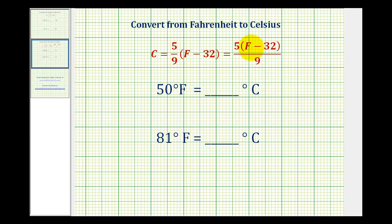To convert from Fahrenheit to Celsius, we use the following equation. Notice how there are two forms to this equation. We have C equals 5 ninths times the quantity F minus 32, which is also equal to five times the quantity F minus 32, divided by nine.